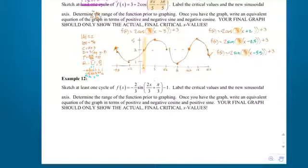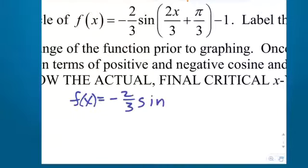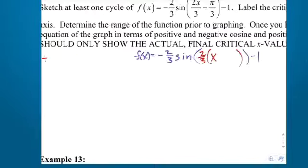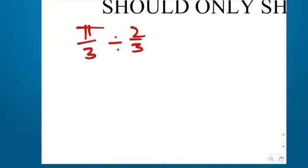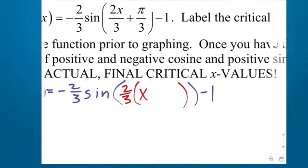Let's try example 12. F(x) = negative 2/3 sine of (2/3·x + π/3) minus 1. Is this in standard transformation form? No. Put the negative 2/3 as is; on the inside, factor out 2/3 from both terms. 2/3 times x, and then π/3 divided by 2/3 — stay, change, flip — gives π/2. So it becomes negative 2/3 sine of 2/3·(x + π/2) minus 1. Mentally redistribute: 2/3 times π/2 is π/3. Correct.